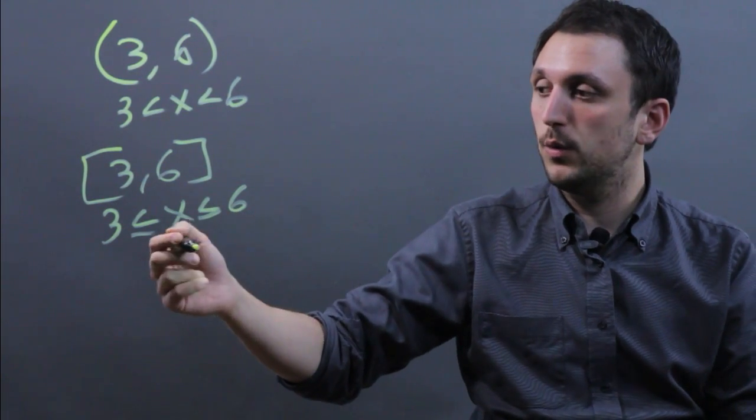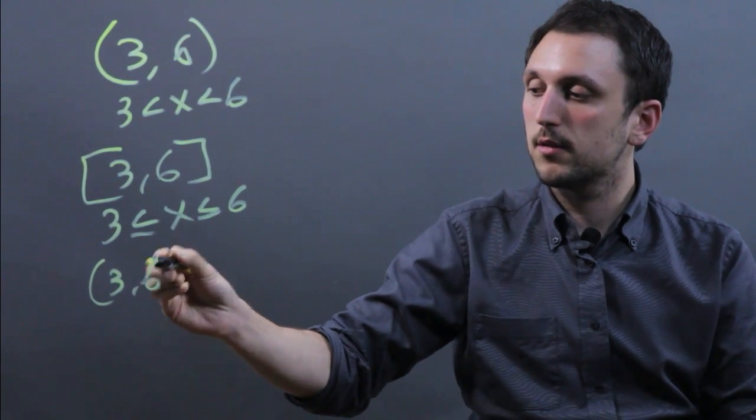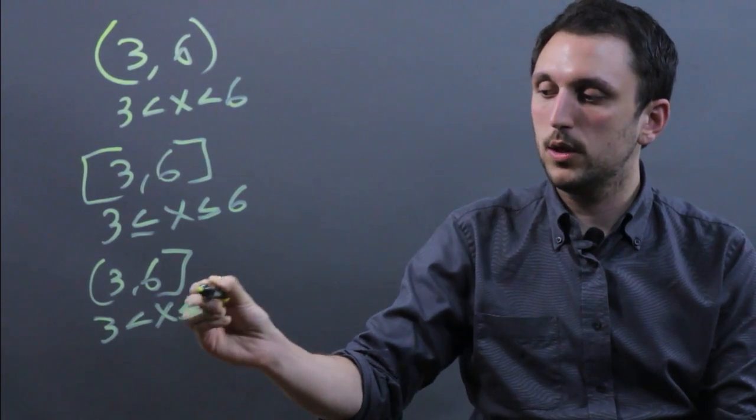You can have mixed and match as well. If you have (3, 6], that means 3 is less than x which is less than or equal to 6.